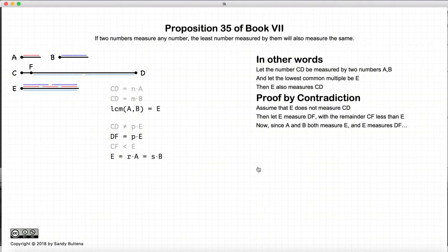So we have the lowest common multiple of A and B is E, so in other words, E is measured by A and B. And we also have that DF is measured by E. So therefore, A and B will also measure DF.